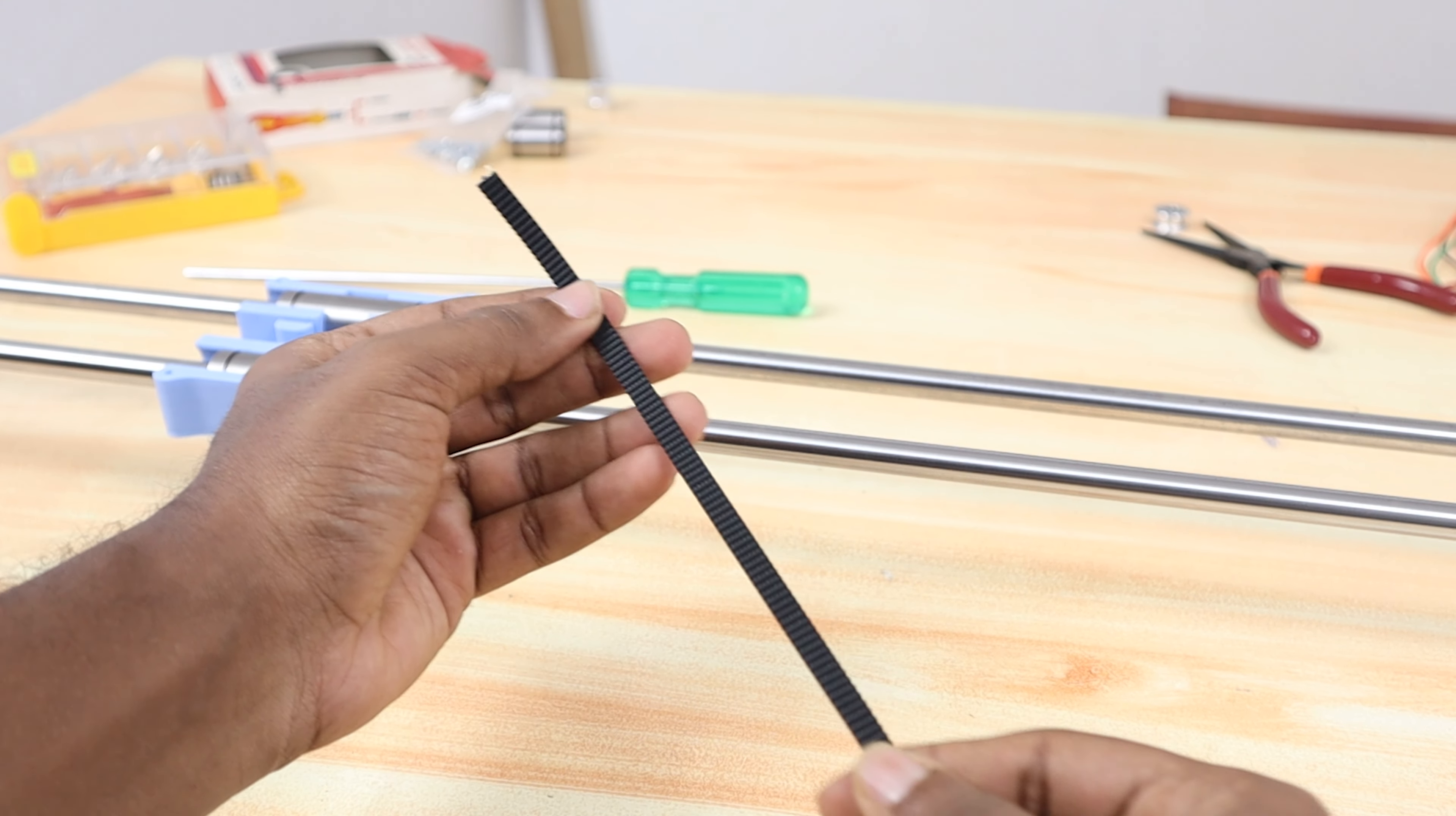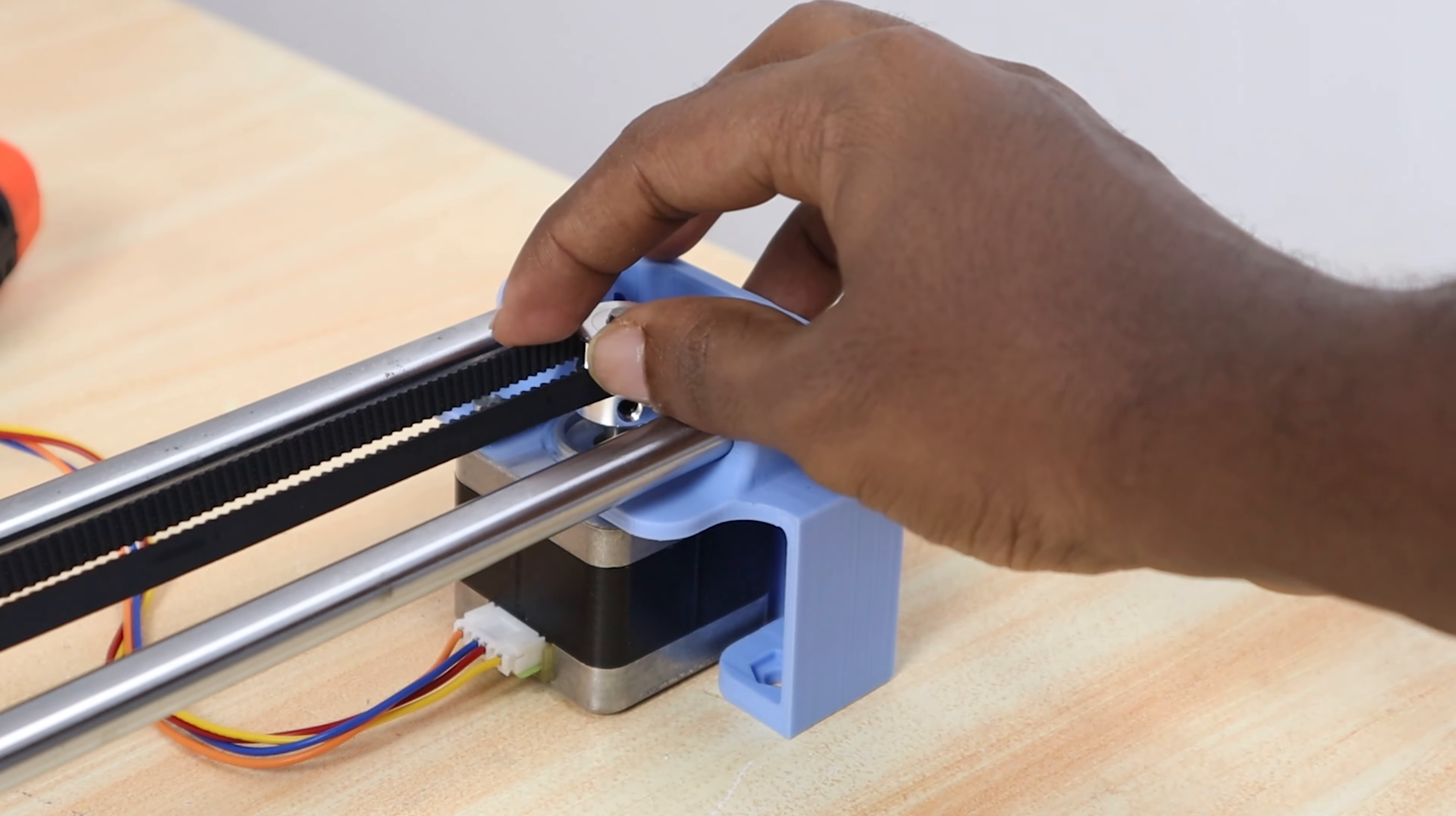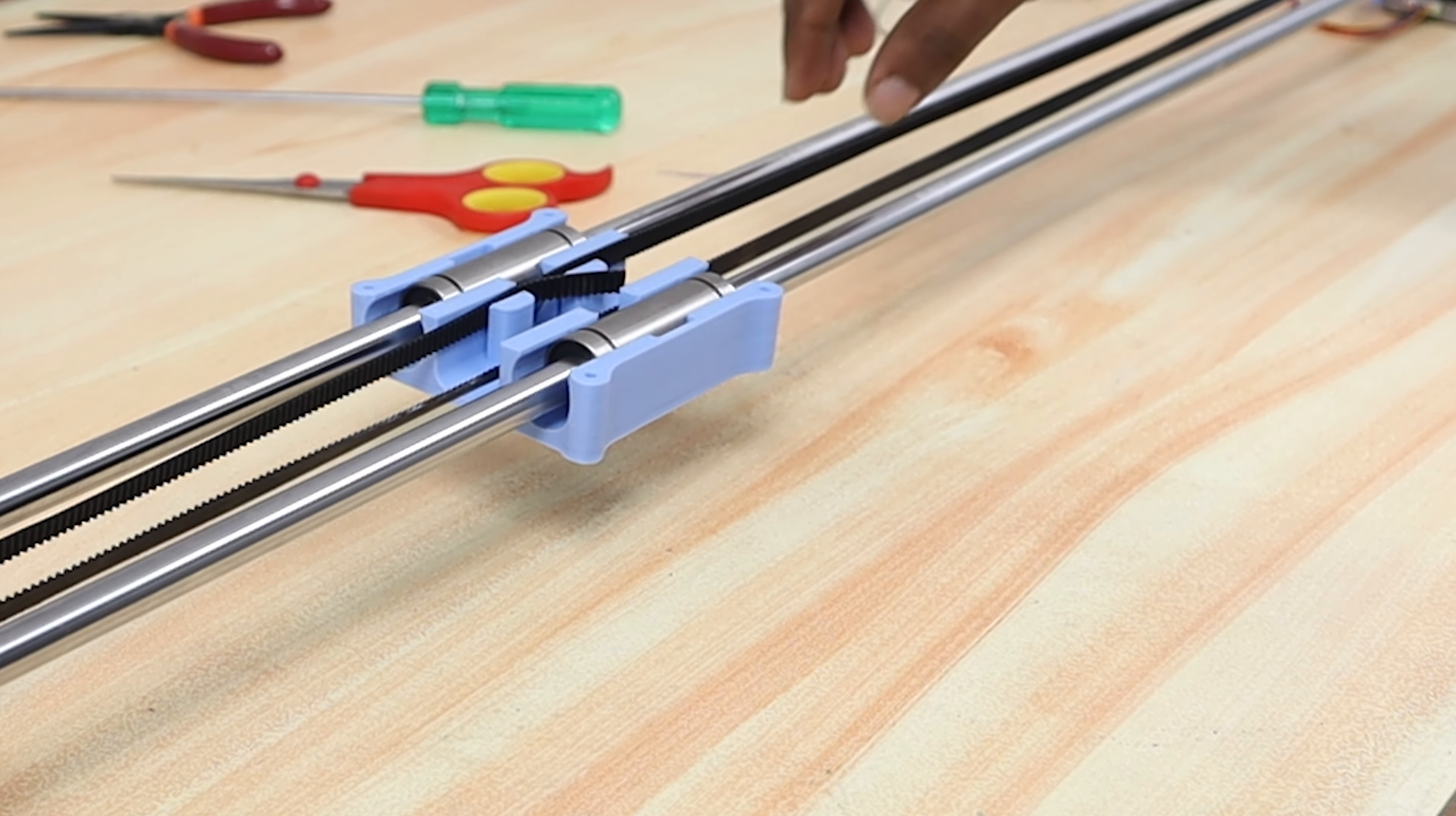Now we took a 2m long GT2 timing belt and attached it to the X axis sliding block by looping through the two ends. One thing you need to remember is that the belt shouldn't be over loose or over tight. It should stay in the middle.